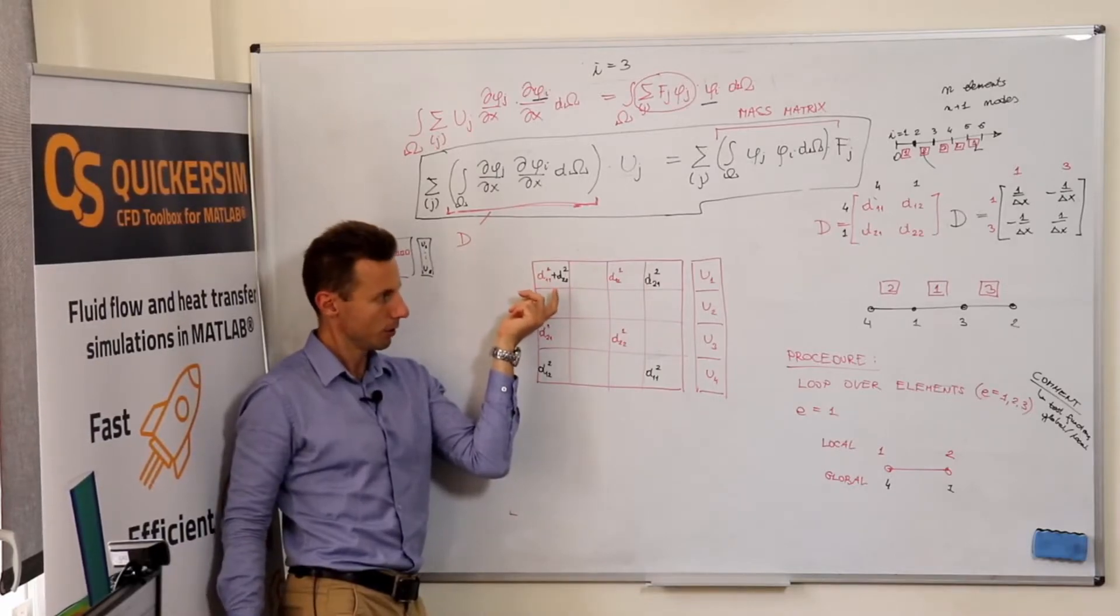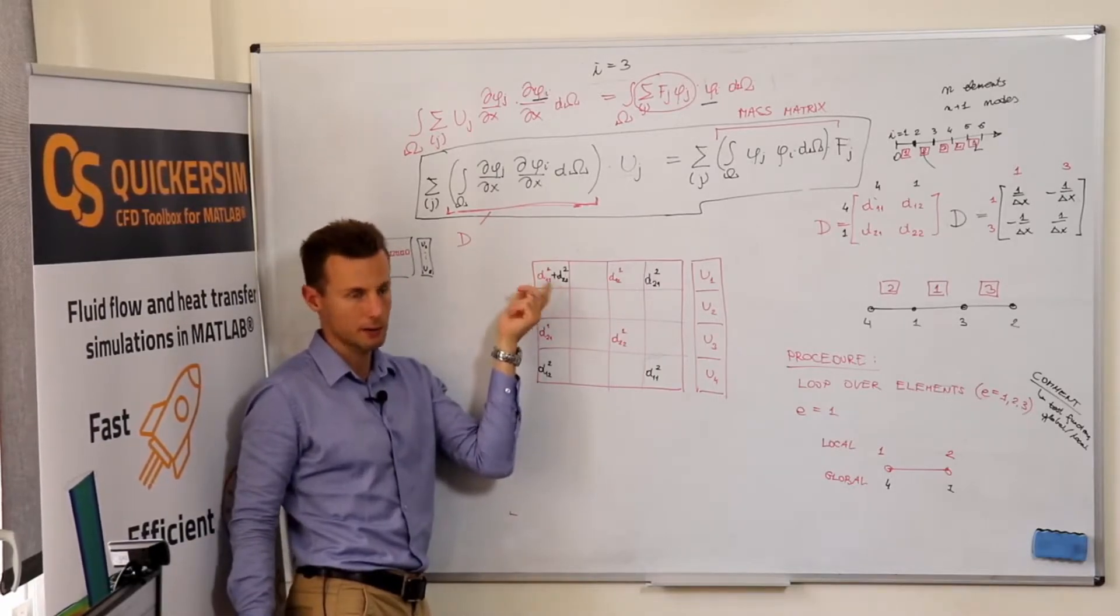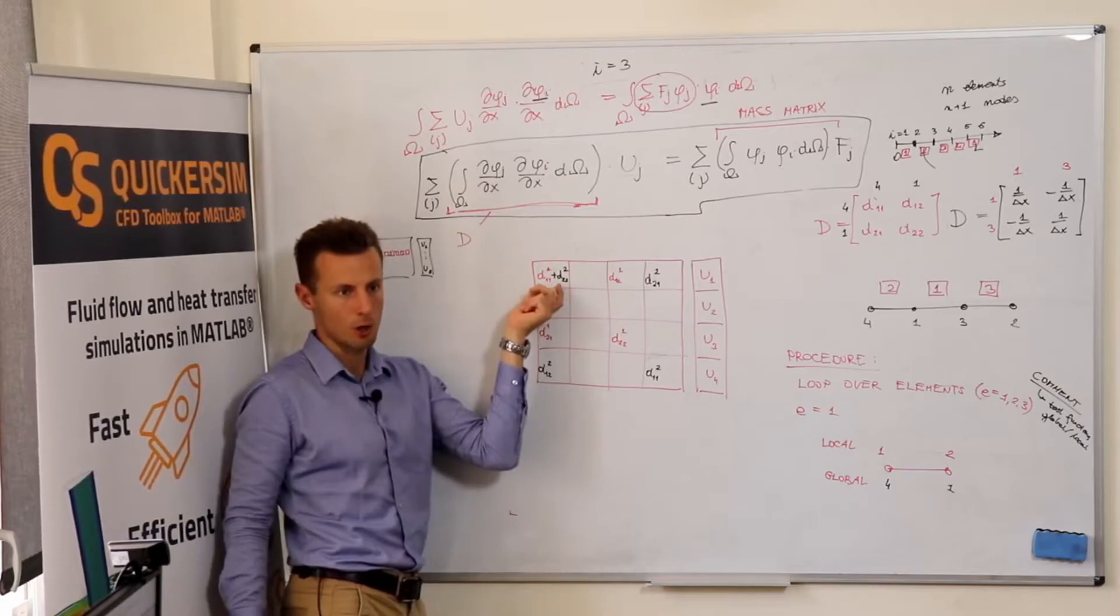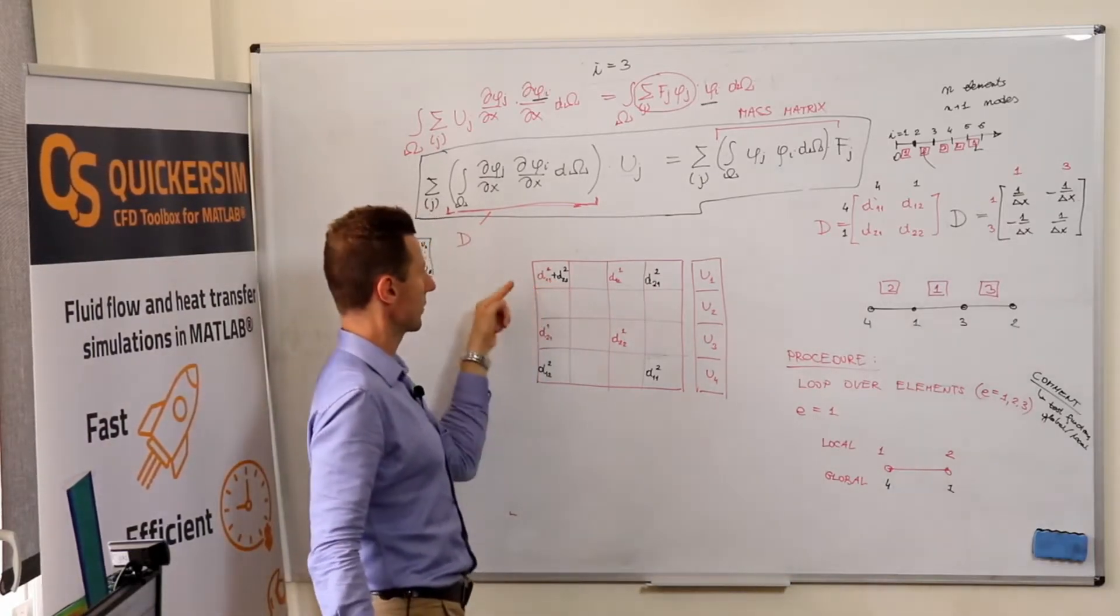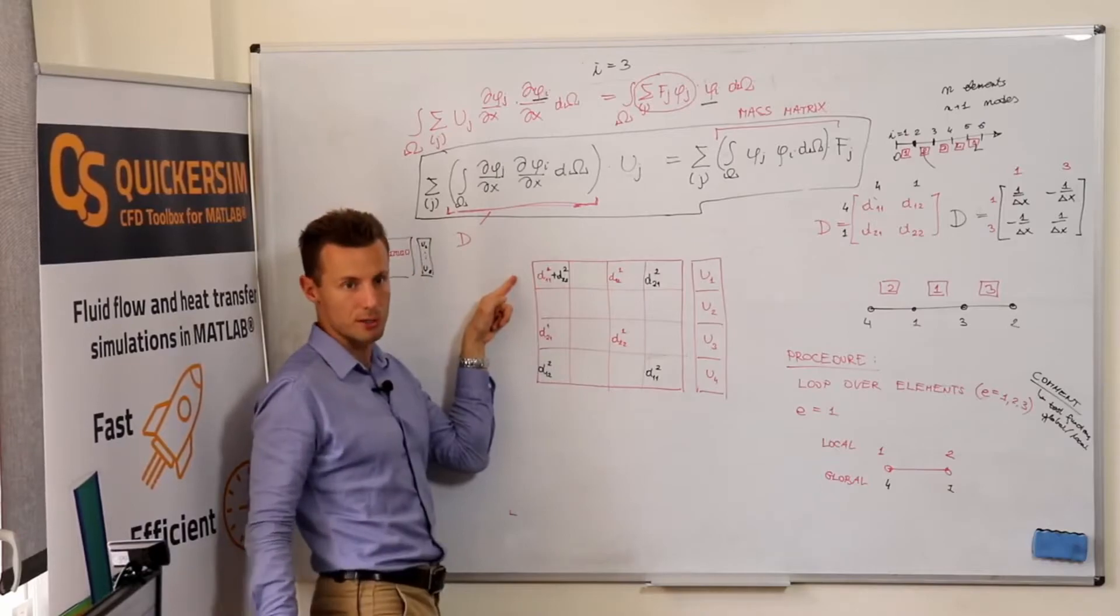First of all, you already see that two elements contribute to the global entry of the matrix. For which node? For the first node.